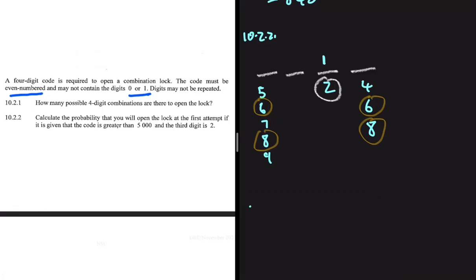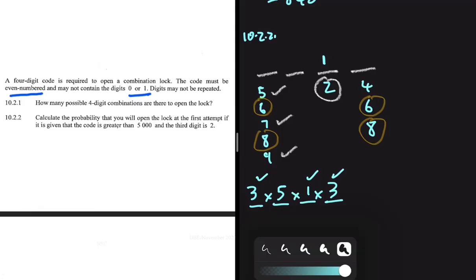Case one: if five, seven, or nine occupies the first spot, we are choosing one of those three digits. The last spot still has three possible even digits (four, six, eight). The third spot has one digit (two), and the second spot has five remaining digits from the original eight after accounting for the ones already used. This case gives 3 × 5 × 1 × 3 = 45 combinations.